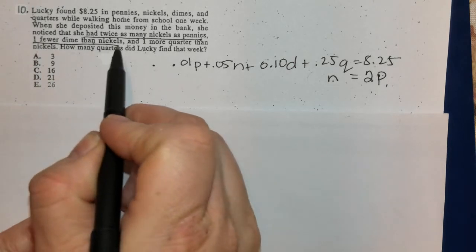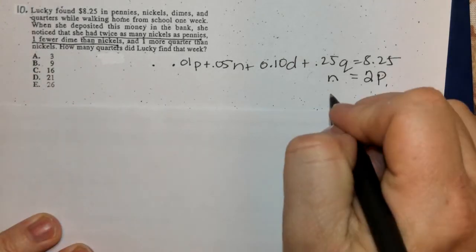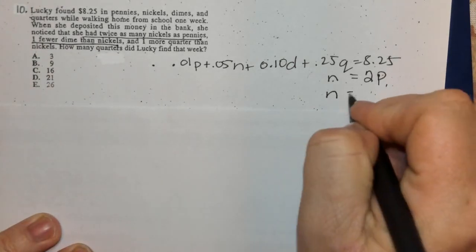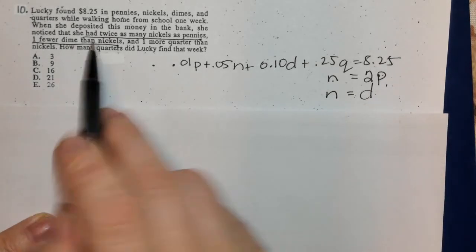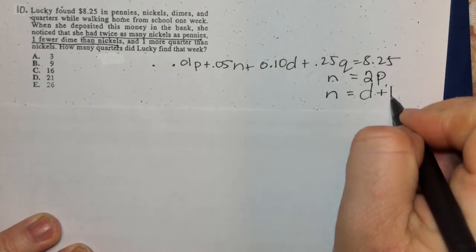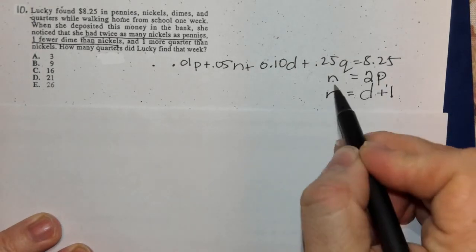One fewer dime than nickels. If they're going to be equal, right now you have fewer dimes by one. So if I add one more to the dimes, now I have an equal amount: D + 1 = N.